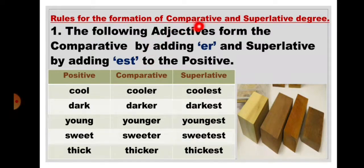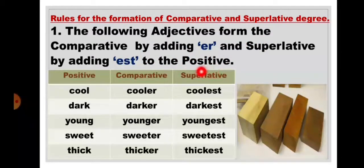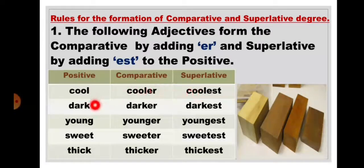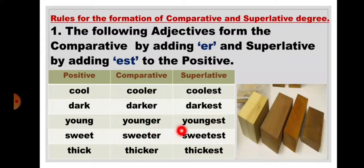Rules for the formation of comparative and superlative degree. Rule 1: The following adjectives form the comparative by adding ER and the superlative by adding EST to the positive. For example: cool → cooler → coolest. Dark → darker → darkest. Young → younger → youngest. Sweet → sweeter → sweetest. Thick → thicker → thickest.